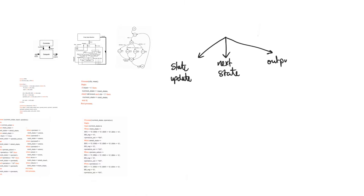Each of the three processes does something very different. The next state process determines what the next state should be. The output process determines what the current outputs of the finite state machine are. And the state update process updates the current state to the next state.